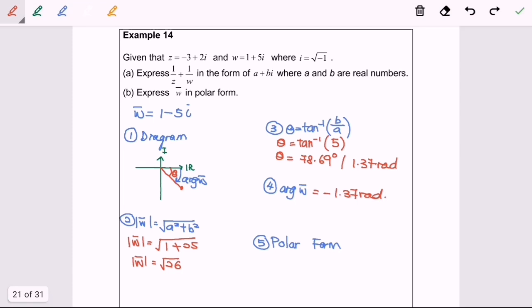So finally, in polar form, the conjugate for w will be equal to square root of 26 bracket cos negative 1.37 plus i sine negative 1.37.